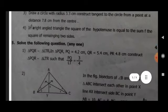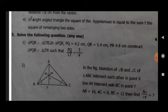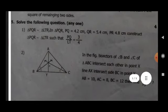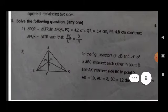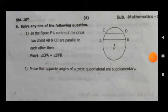Question 5, solve the following question, any one. Four marks at 4. First, triangle PQR is similar to triangle LTR. In triangle PQR, PQ is equal to 4.2 cm, QR is equal to 5.4 cm, PR is equal to 4.8 cm. Construct triangle PQR and triangle LTR such that PQ upon LT is equal to 3 by 4. Second, in the figure, bisectors of angle B and angle C of triangle ABC intersect each other in point X. Line AX intersects side BC in point Y. AB is equal to 10, AC is equal to 8, BC is equal to 12. Then find AX upon XY.